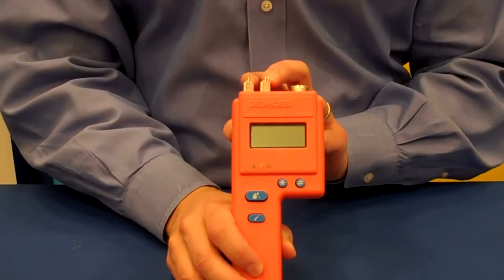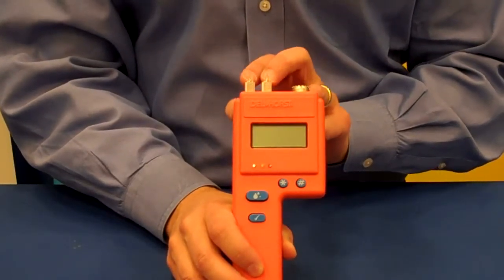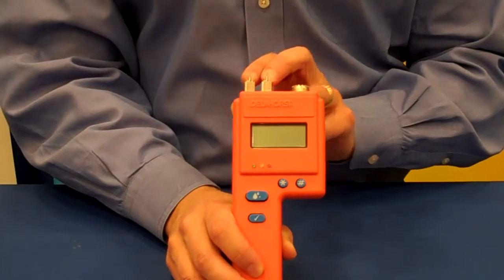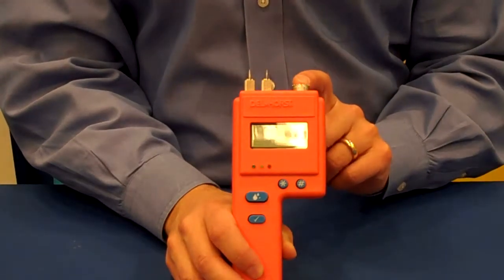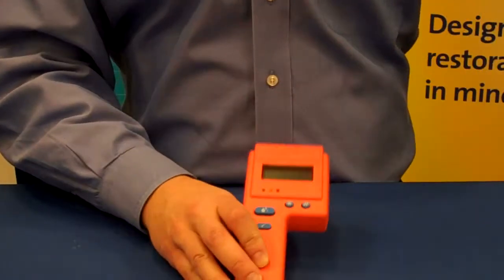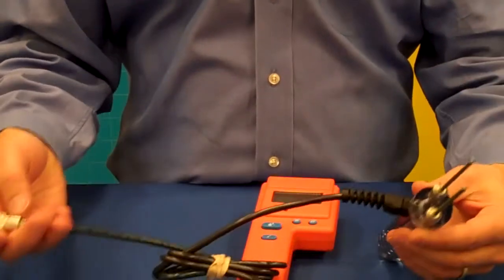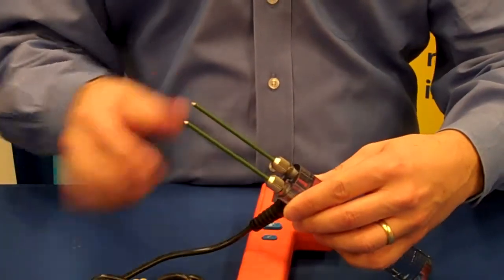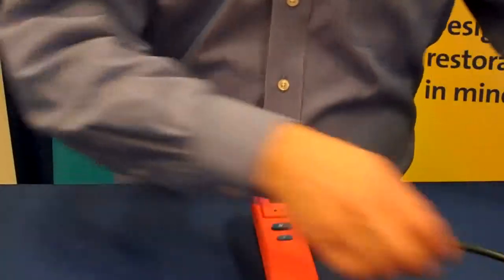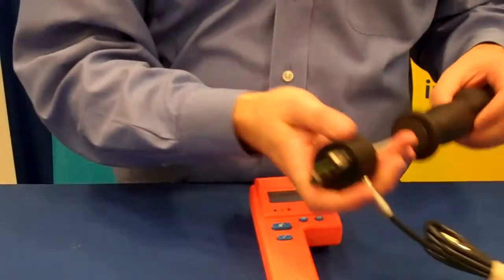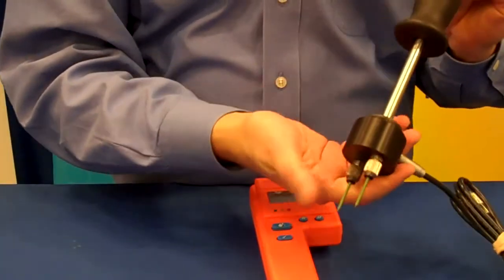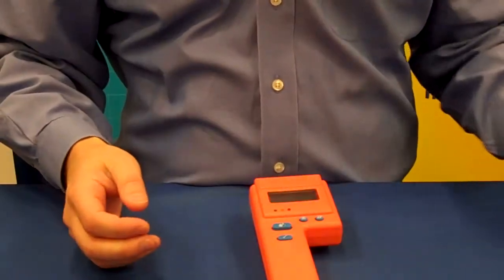The two pins that are mounted on the top of the unit are used for drywall and for wood up to an inch thick. There's also a connector on the side of the meter that allows you to attach any one of our electrodes, like the deep wall probe for getting into insulation, or the hammer probe, which allows you to drive the pins into flooring and the subfloor.